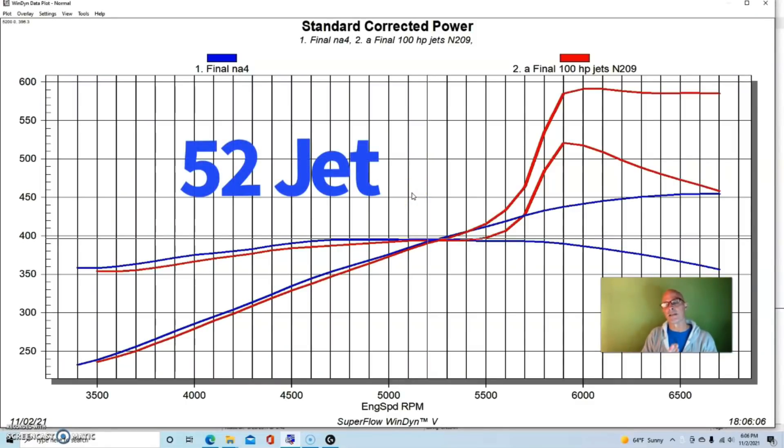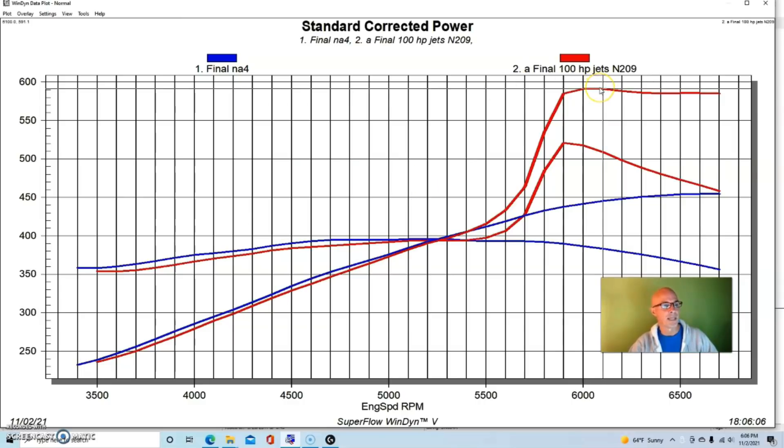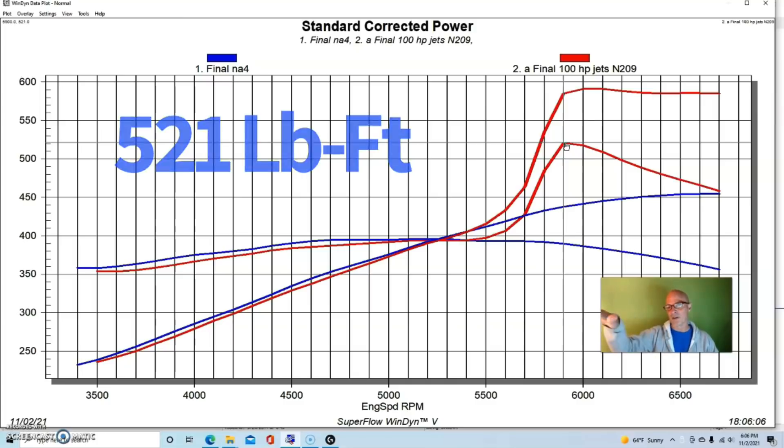This ended up with our nitrous making 591 horsepower and 521 foot-pounds. You can see we activated this fairly late. We were just trying to get a big number when we were doing the competition, so the later that we hit it the more nitrous we would still have in our tank and we'd just get a big number, kind of what we were looking for.